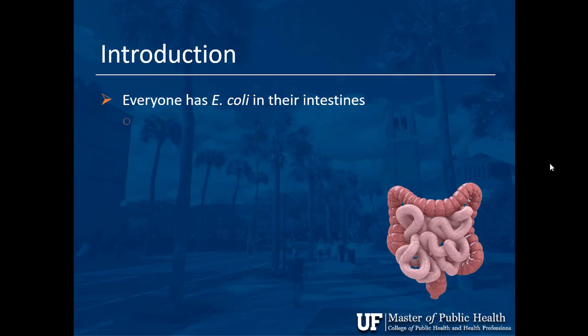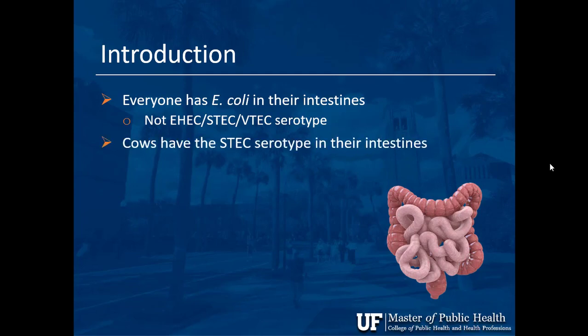The question becomes: why are we not getting sick? Because not everybody has the EHEC or Shiga Toxin type E. coli in their gut. You have different strains of E. coli — as we saw in the other groups — and not the ones that cause bloody diarrhea.